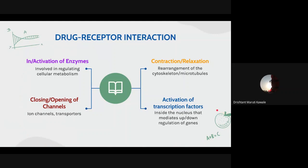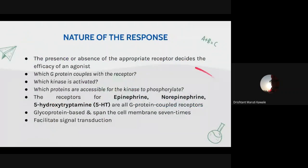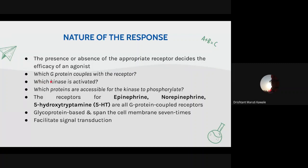The nature of the response depends on the presence or absence of the appropriate receptor, which decides the efficacy of an agonist — how effective the drug molecule is. Important questions to ask: Which G protein couples with the receptor — Gs, Gi, or Gq? There are different specificities, which determine which kinase is activated — JAK kinases, protein kinases, or tyrosine kinases — depending on which type of drug is binding.